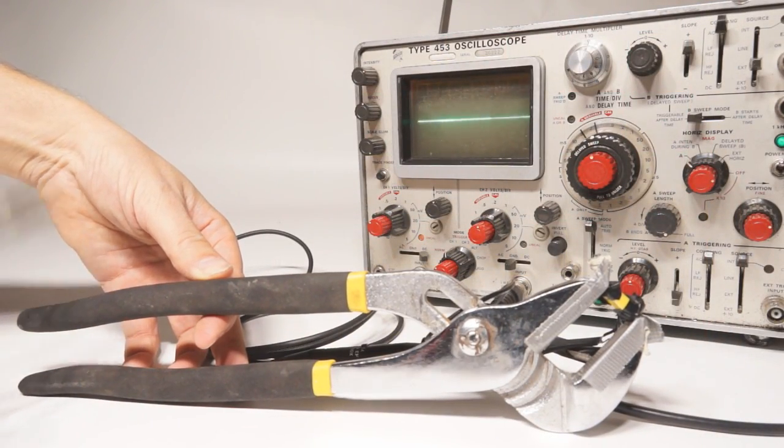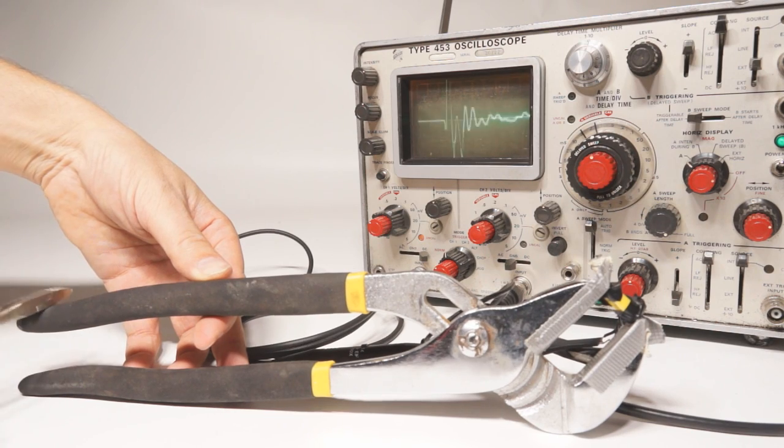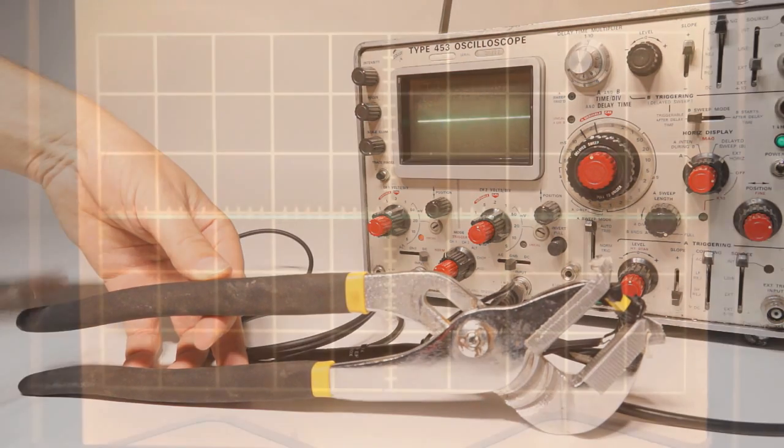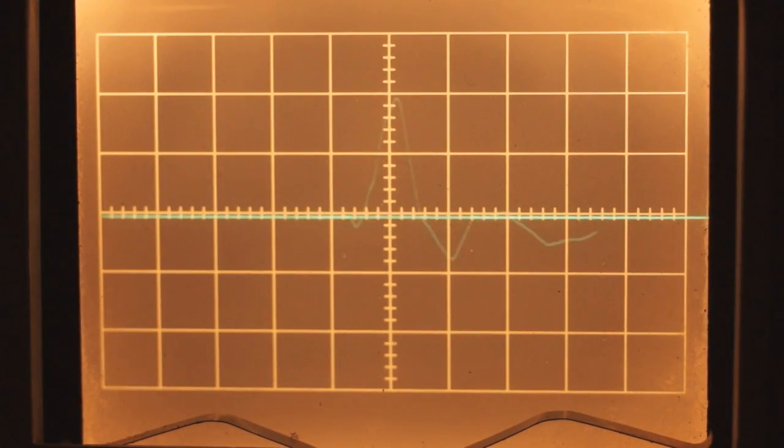By placing the crystal in the jaws of some channel locks and striking the handle with another set of pliers, you can see that a much larger voltage is developed. Here the vertical scale is set to 10 volts per division.